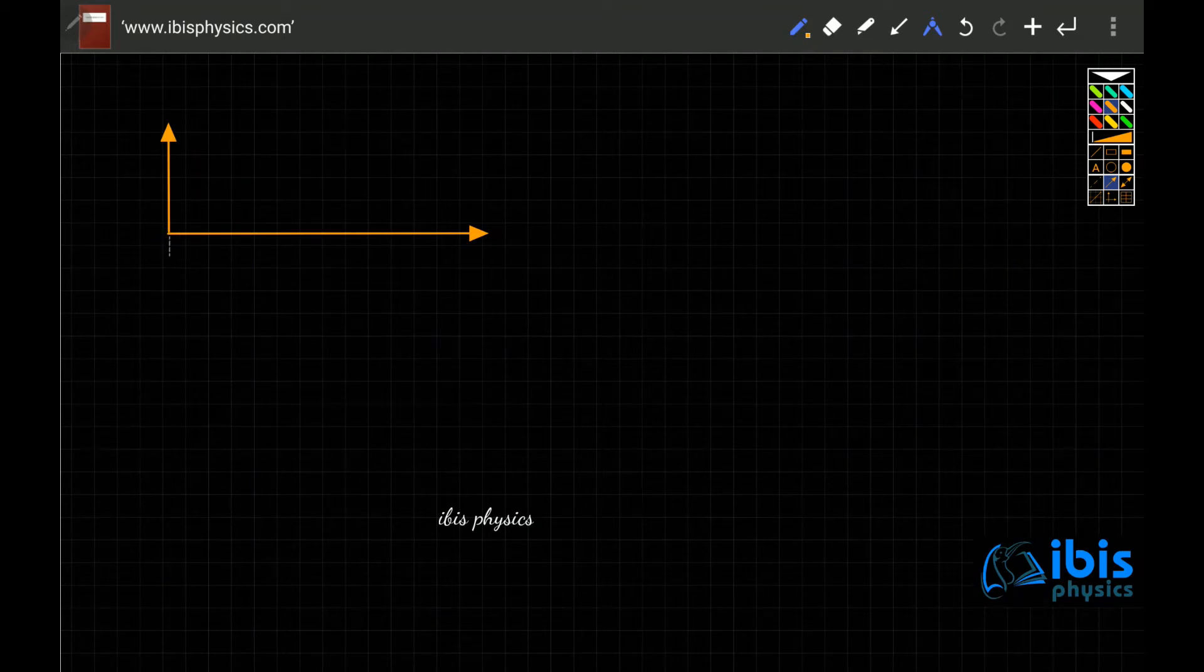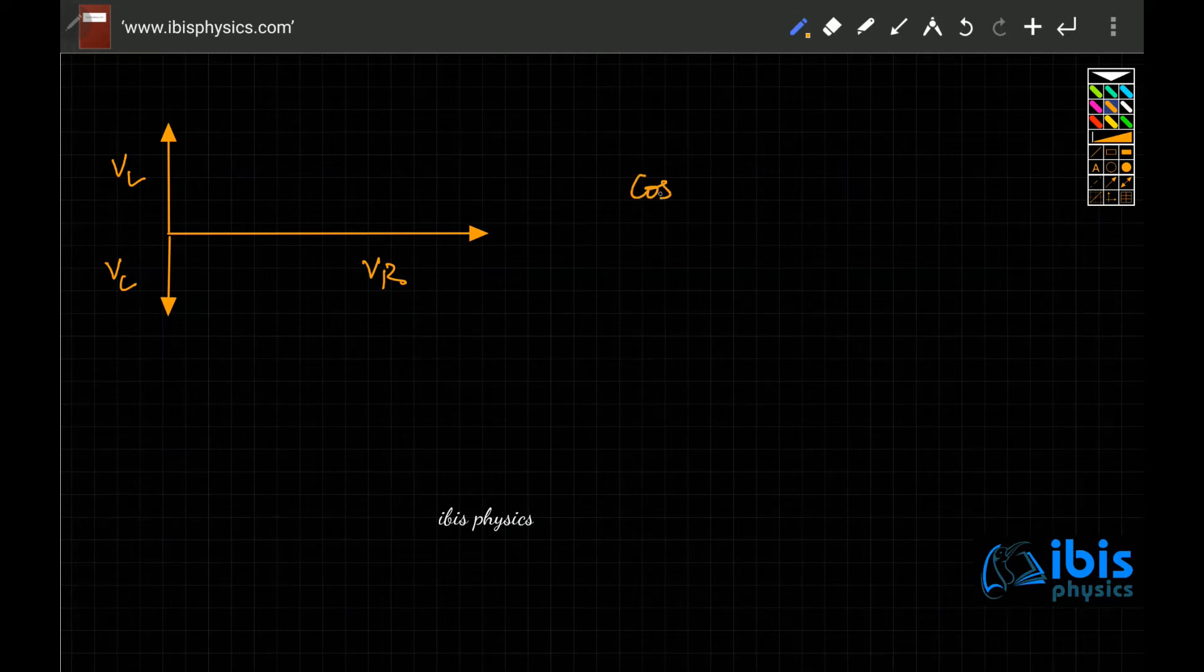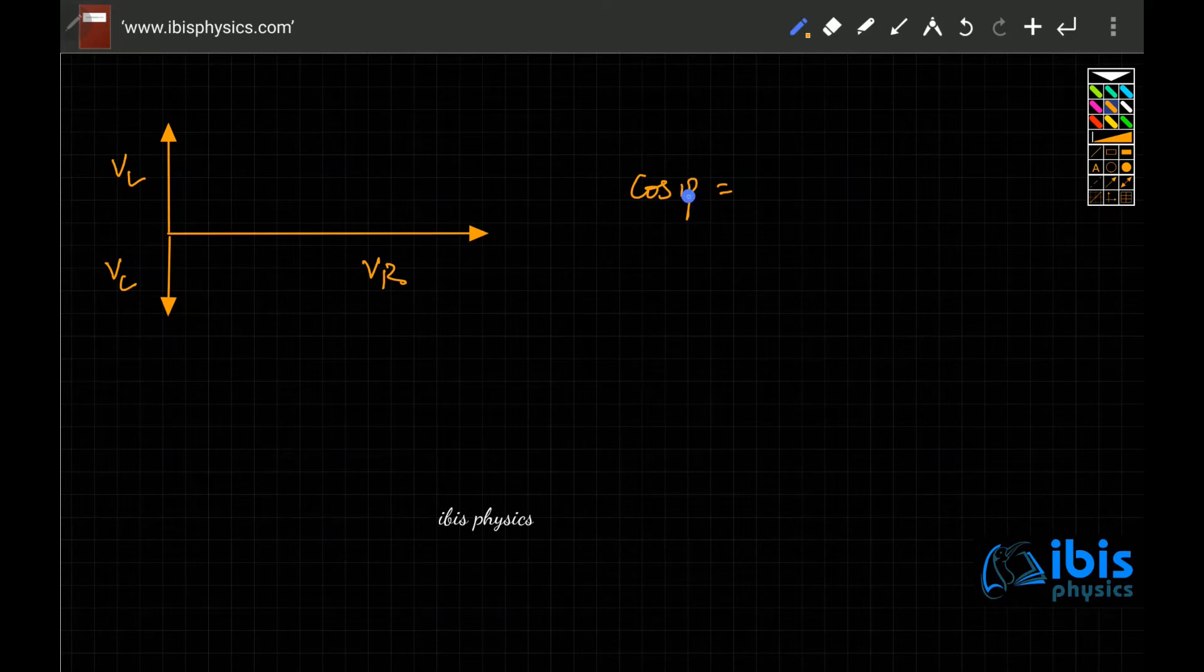You know that in an LCR circuit, if this is VL, this is VC, this is VR, then the effective thing is cos phi, the power factor, or where phi stands for the phase.